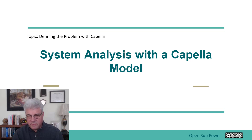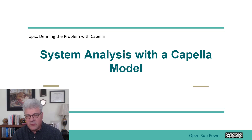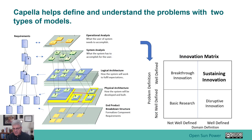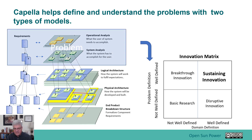Welcome back to the Introduction to Capella course. The next portion of the course we're going to talk about system analysis with the Capella model — what it means and how you would go about doing it. As mentioned before, the Capella model allows you to go from operational analysis to system analysis to develop the whole product, implementing this innovation matrix. What we're going to focus on now is the problem itself, specifically the system analysis portion — what the system has to accomplish for the user, now that we understood the problem with operational analysis covered in the previous lesson.